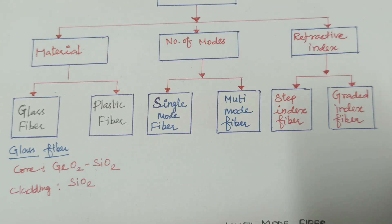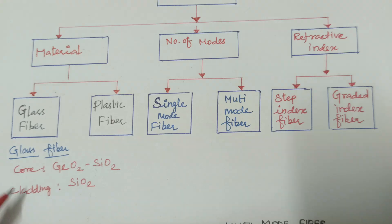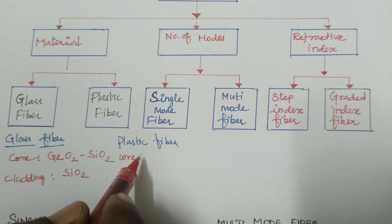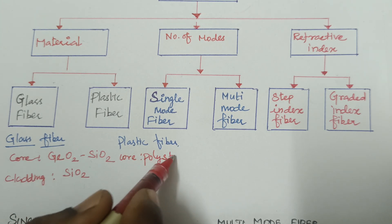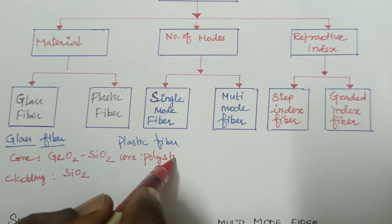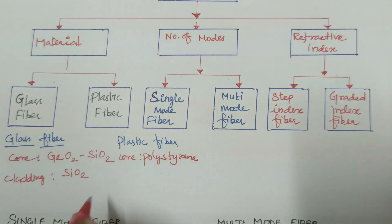The next type is plastic fiber. Plastic fiber means fiber optic material which is made up of plastic materials. Here the core and cladding materials are also used. The core material is made up of polystyrene, and the cladding material is made up of PMMA.